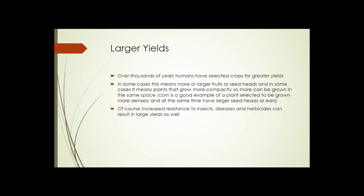Larger yields: over thousands of years, humans have selected crops for greater yields — that's one of the things that has driven agriculture. In some cases, this means more or larger fruits or seed heads; in other cases, it means plants that grow more compactly, so more can be grown in the same space. Corn or maize is a good example of a plant selected to be grown more densely while also having larger seed heads or ears. Increased resistance to insects, diseases, and herbicides can result in larger yields as well.